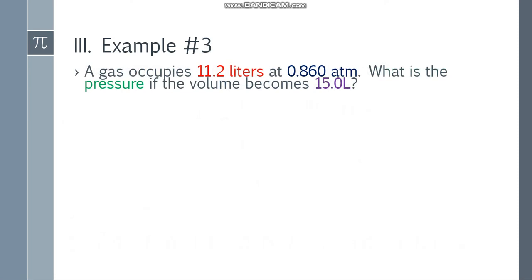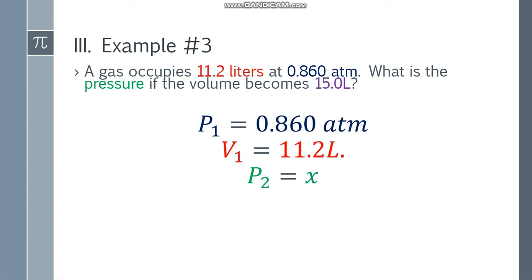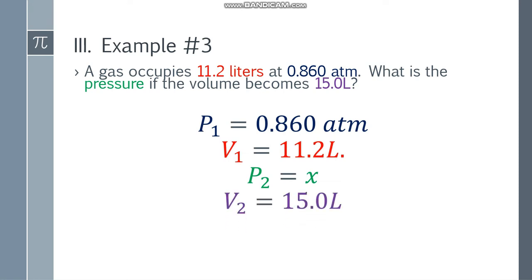Example number 3. The gas occupies 11.2 liters at 0.860 atm. What is the pressure if the volume becomes 15.0 liters? So our initial pressure is 0.860 atm and the initial volume is 11.2 liters. The resulting pressure is unknown, so I'll put x, and the resulting volume is 15.0 liters. Since we have all four variables, let's place the formula: P1 V1 = P2 V2.